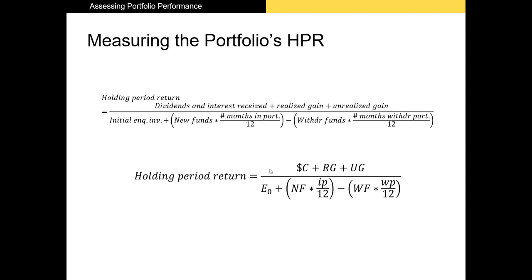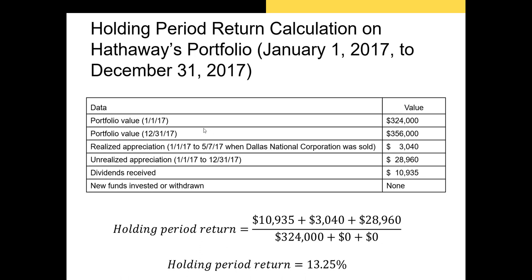Putting everything together: our portfolio value at the start was $324,000 and at the end was $356,000. Our unrealized gain was $28,960, total dividends were $10,935, and realized appreciation was about $3,000. We calculate income plus realized capital gains plus unrealized capital gains, divided by our portfolio value at the beginning adjusted for any changes in holdings, and our holding period return is 13.25%.